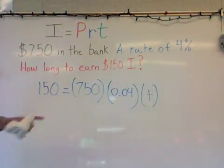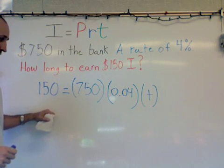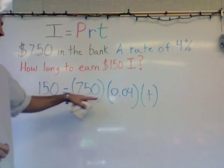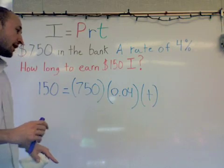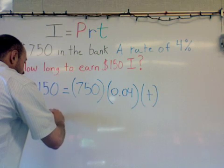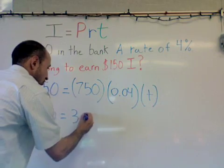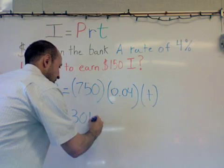So now all I can really do is keep this principal the same on the left side of the equal sign, and I can multiply these two numbers. So I want to take $750, multiply it by 0.04. When I do that, I get an answer of 30. So I'm going to set this up. $150, that's our interest, is equal to 30 times T. It ends up being 30T.